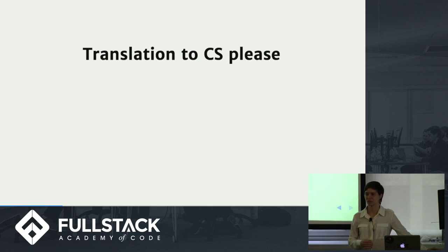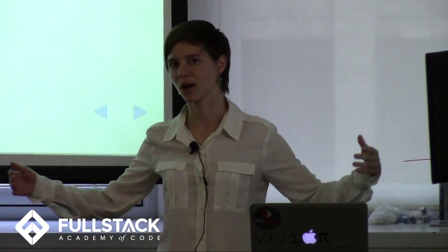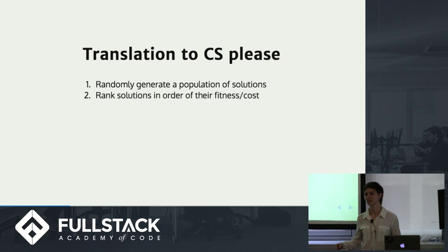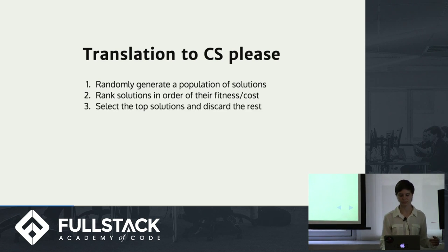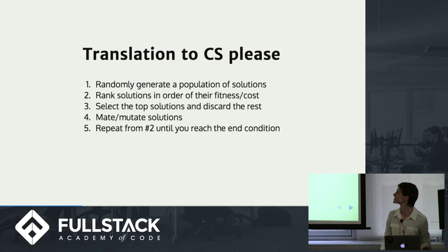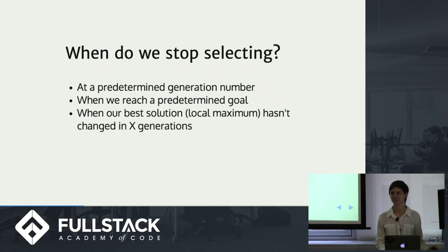When we translate this into computer science, we get a randomly generated population of solutions instead of genomes — not all possible solutions, but a randomly generated set of a certain size. We want to rank those solutions in their order of fitness, figuring out which ones are most fit and closest to our optimal solution. We select those top solutions and discard the rest. Those top solutions then get to mutate, and you repeat those steps until you reach your end condition, which will be completely different for any given problem.